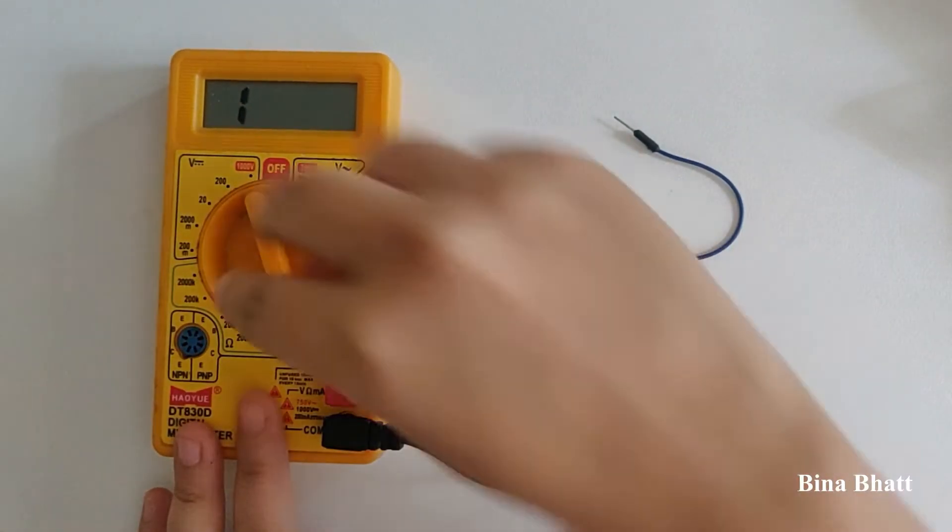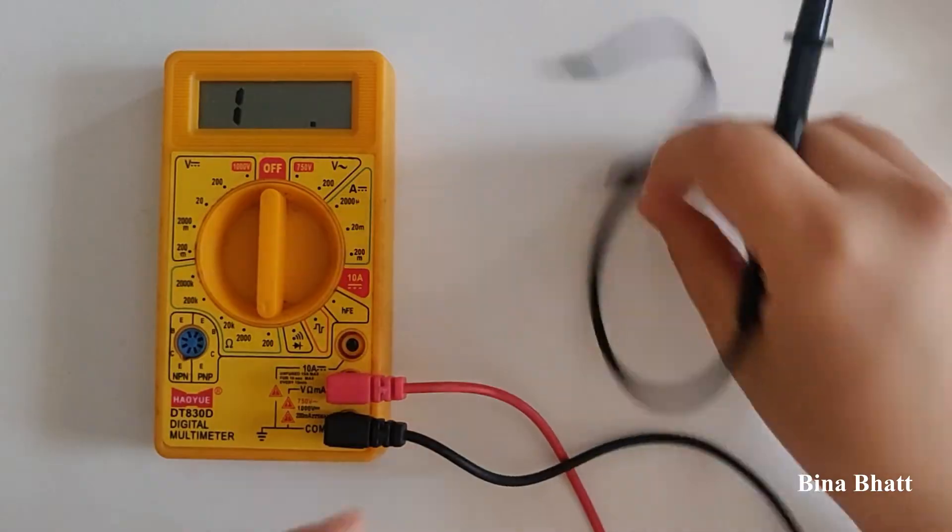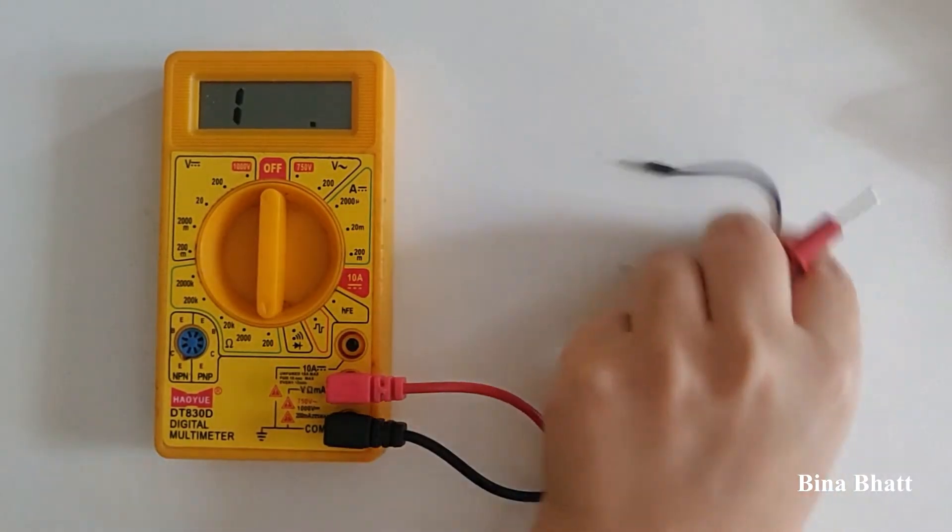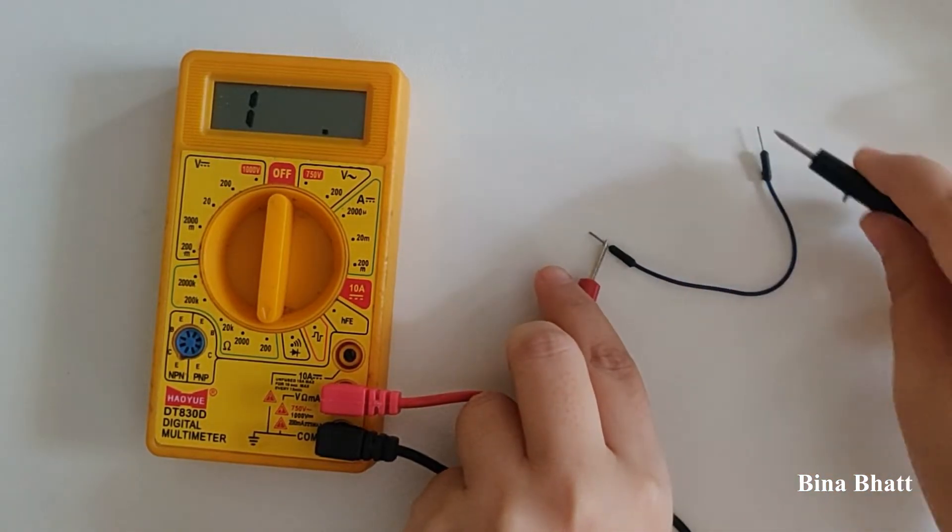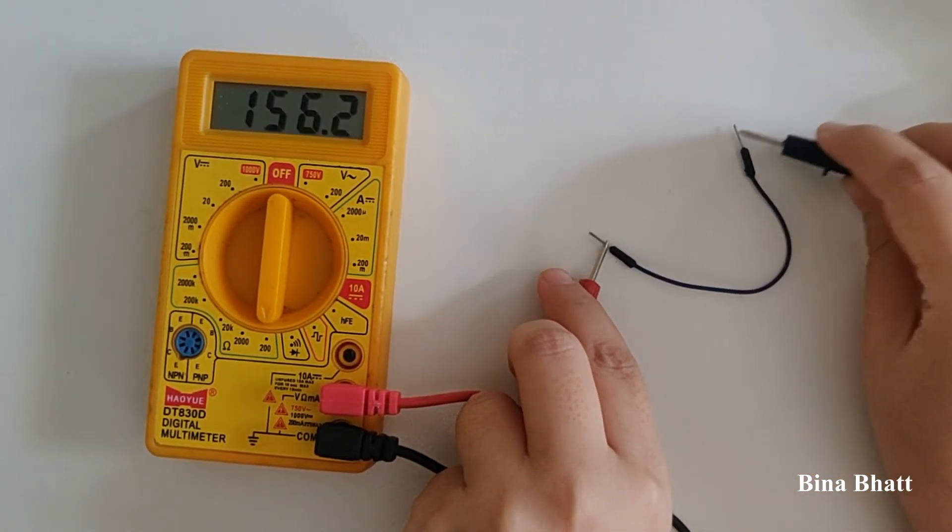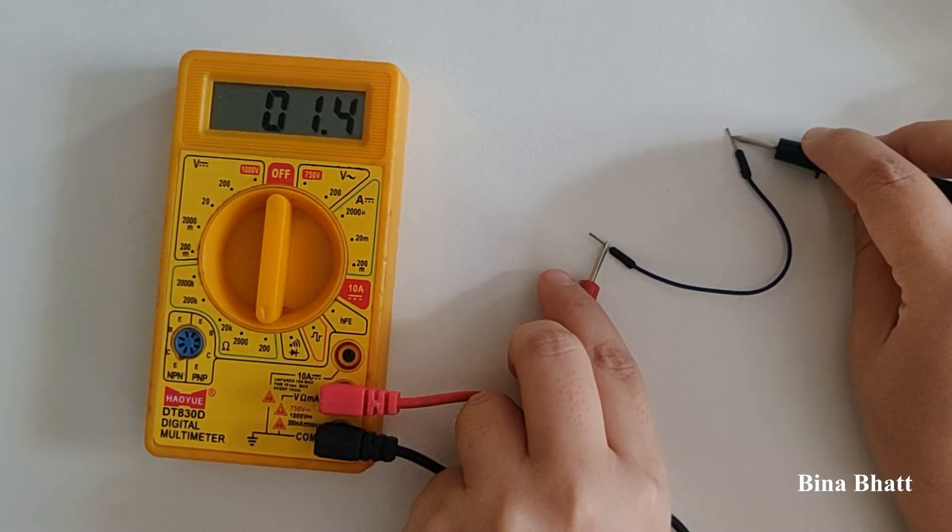Before checking for continuity, let's check the resistance of this wire. Continuity simply means that between two points there should be minimal or zero resistance. Let's place the probes on the two ends of the wire and check the resistance. It's around 1.4 ohms, which is hardly anything, so these two points are obviously connected.